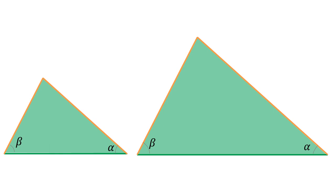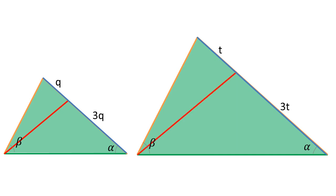In two similar figures, elements that play the same role in each figure are called corresponding elements or homologous elements. Examples of corresponding elements in two similar triangles are the sides opposite the beta angle in each triangle. If we draw a cevian from the beta angle that divides the opposite side into two segments with ratio 1 to 3, and do the same in the other triangle, those two cevians are corresponding elements. One important characteristic of similar figures is that the angle between two lines in one has the same measure as the angle between the corresponding lines in the other.